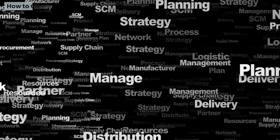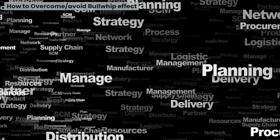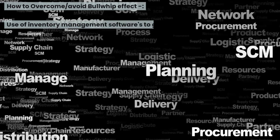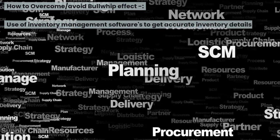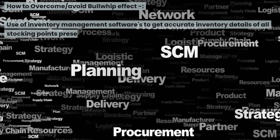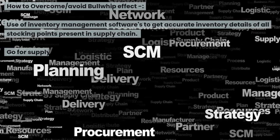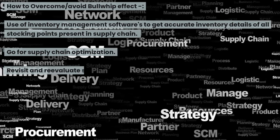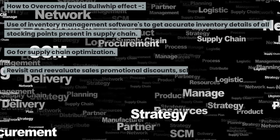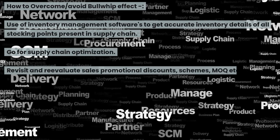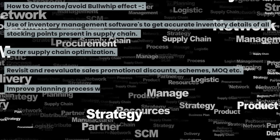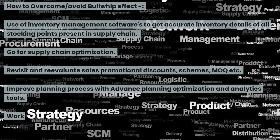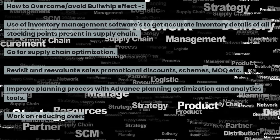How to overcome and avoid the bullwhip effect: Use inventory management software to get accurate inventory details of all stocking points in the supply chain. Go for supply chain optimization. Revisit and reevaluate sales promotional discounts, schemes, and MOQ. Improve the planning process with advanced planning optimization and analytics tools. Work on reducing overall lead time.